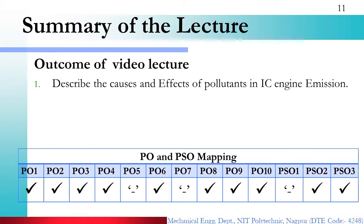So in this way we have come to the end of this video lecture. In this lecture we learned about different pollutants — why they occur and what their effects are. The outcome of this video lecture is that you will be able to describe the causes and effects of pollutants in IC engine emission. The PO and PSO mapping includes PO1, 2, 3, 4, PO6 (environment and sustainability), PO8, 9, 10, and PSO2 and PSO3.